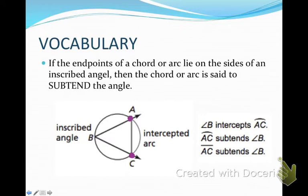This is not easy for me to say. So in our diagram here, angle B intercepts arc AC, but arc AC subtends angle B, and chord AC subtends angle B.